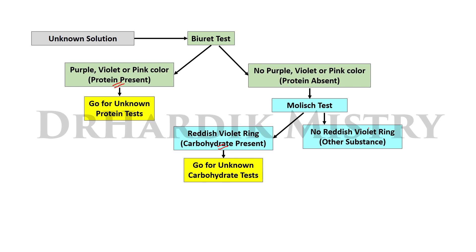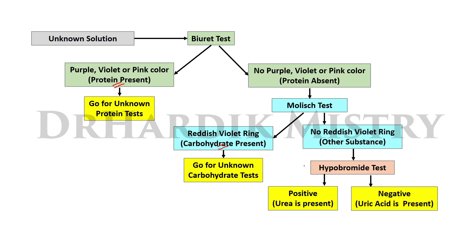If you are not seeing a reddish-violet ring, substances other than carbohydrates are present. Perform the hypobromite test. If the hypobromite test is positive, urea is present; if negative, uric acid is present. This is the identification of unknown solution. Please share this with your friends, batch, and colleagues. Thank you.